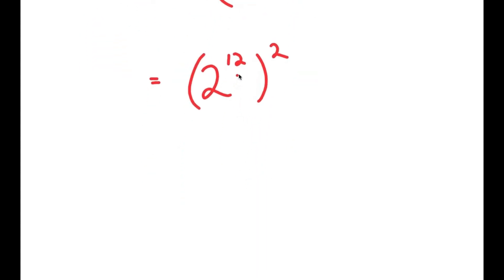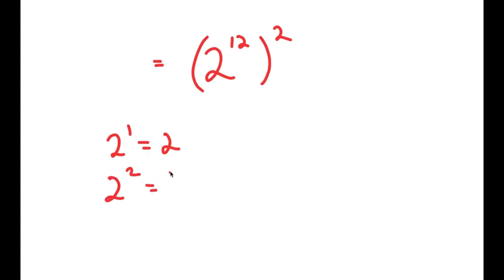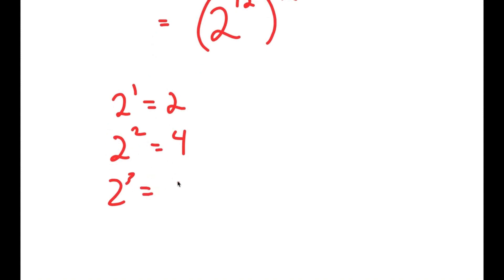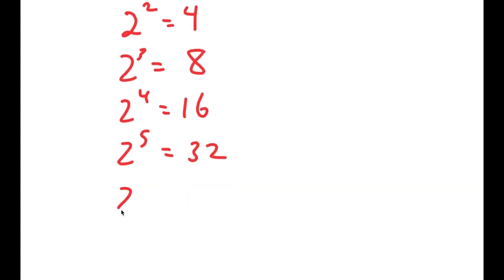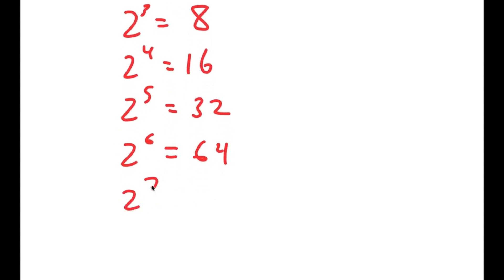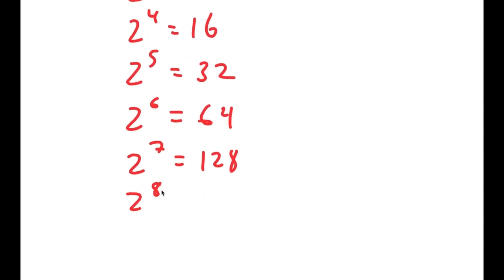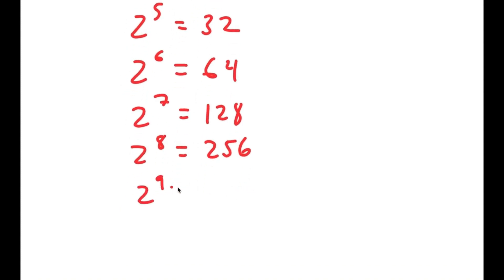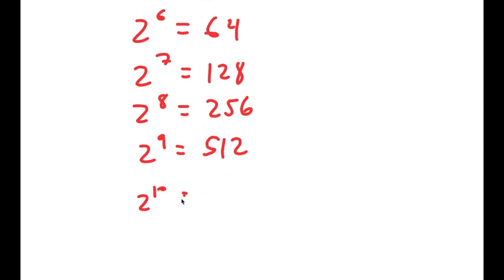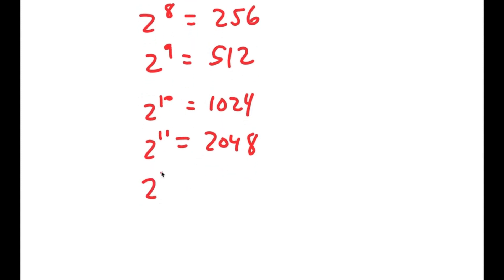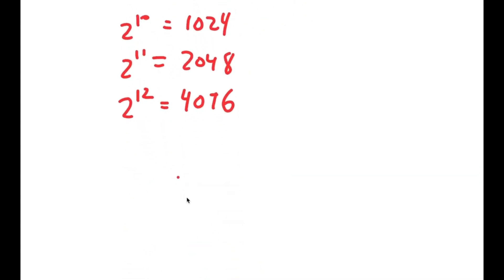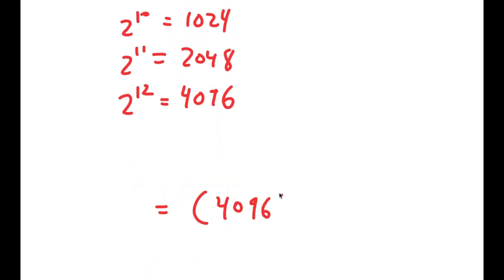Now, 2 to the power of 12: 2 to the power of 1 is equal to 2, 2 to the power of 2 is double of 2 to the power of 1, so 4, and 2 to the power of 3 is double of 2 to the power of 2, which is 8. This pattern continues, and I keep doubling until I reach 2 to the power of 12, which is equal to 4,096. So now I get 4,096 squared.